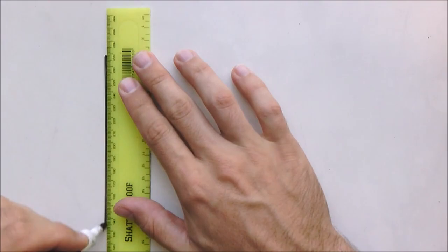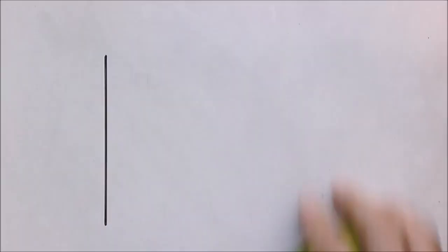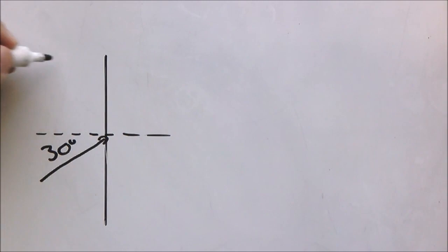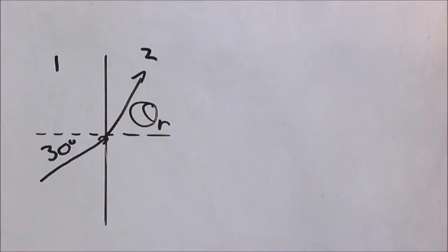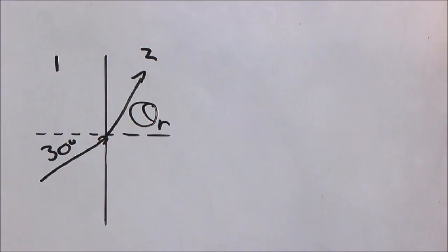Okay, so the second example: here's our boundary, we have our normal, and we have light traveling at an angle of 30 degrees from medium 1 to medium 2. Again, the angle of refraction is the unknown. Now medium 1 in this case is glass, and medium 2 is air.